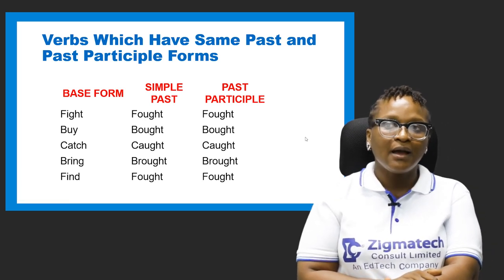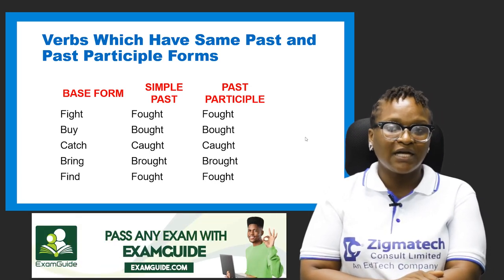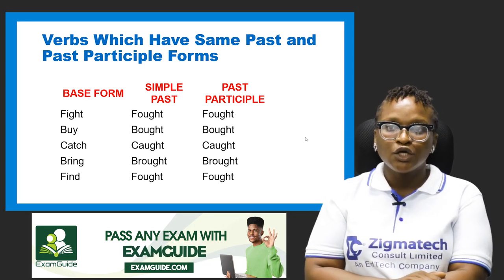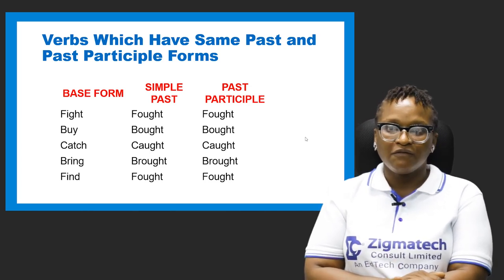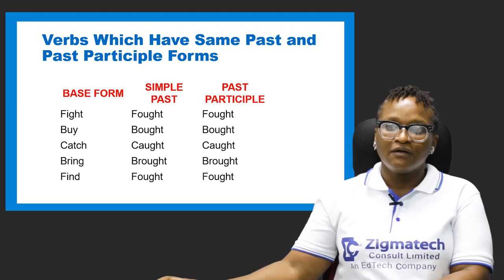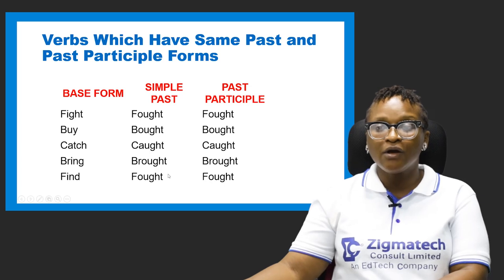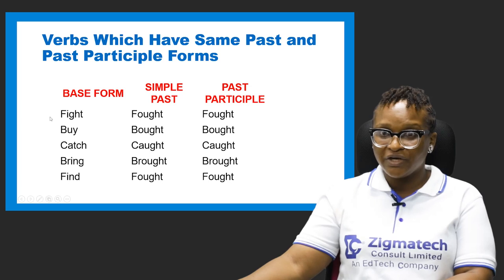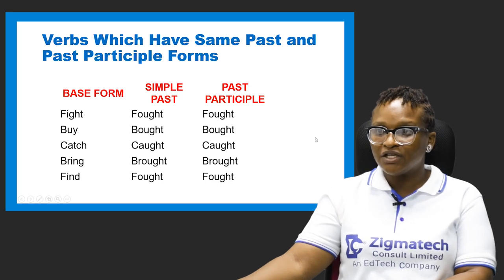Then, we have verbs which have same past and past participle: fight, buy, catch, bring, find. You can see that the past and the past participle are basically the same: fought, fought; bought, bought; caught, caught; brought, brought; found, found. A note on that last one — 'find' forms 'found' and 'found' — not 'fought,' that was a typographical error in the chart.